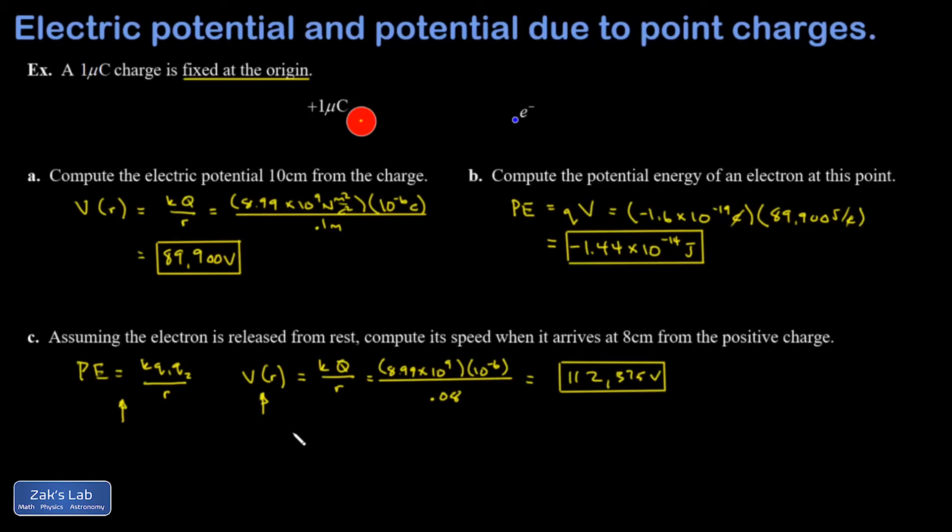So now, rather than plugging in qV to find the potential energy of the electron at this point, why don't I just go ahead and say what I want is the change in potential energy, which is given by q times the change in the potential. And that's negative 1.6 times 10 to the negative 19 coulombs times delta V. Delta always means final minus initial. There's my final, and here's my initial.